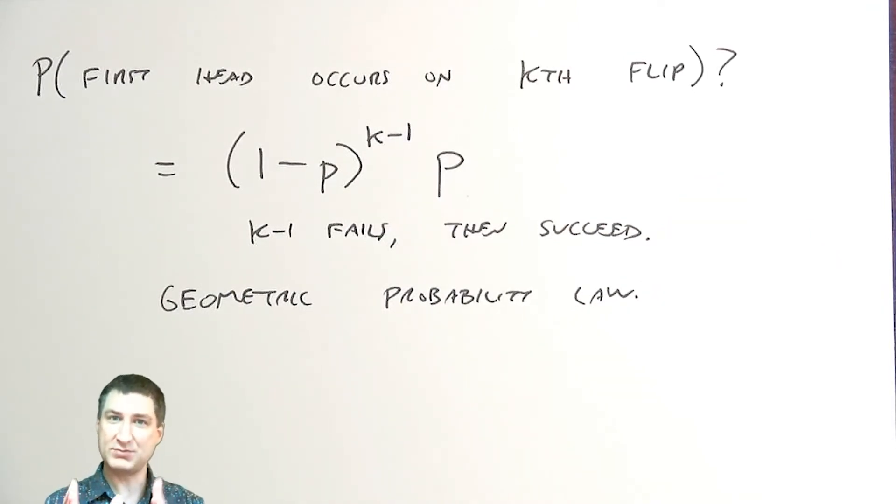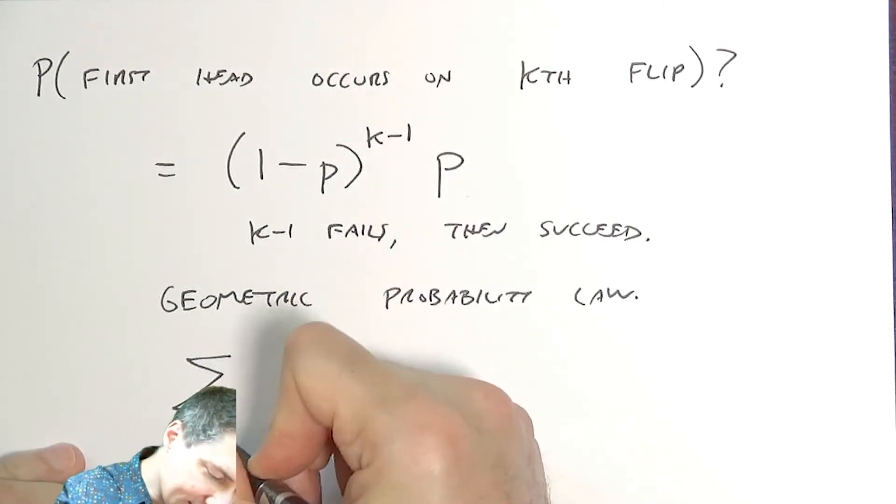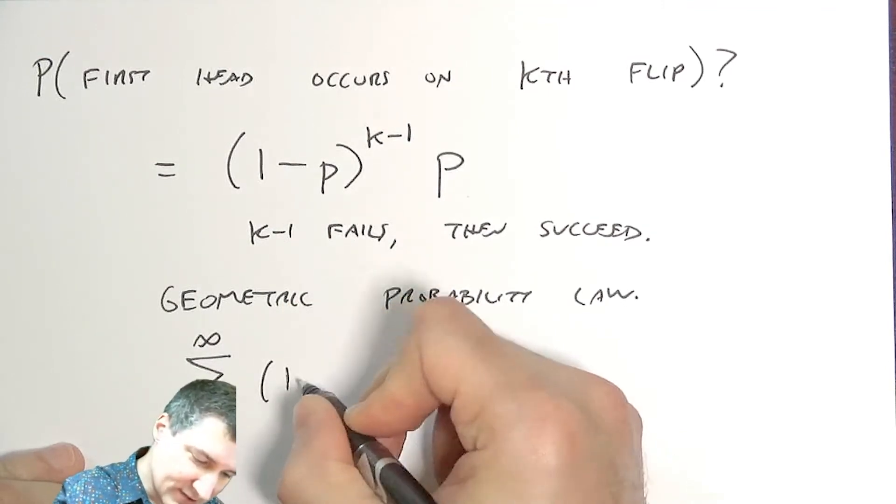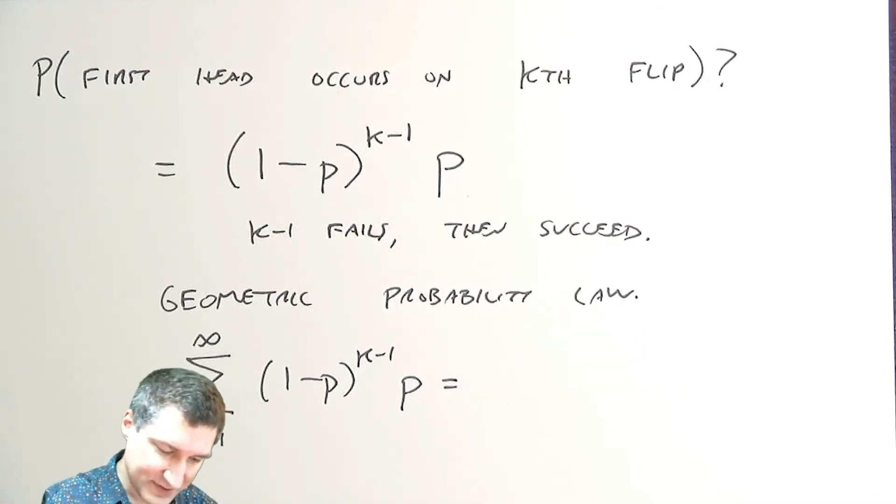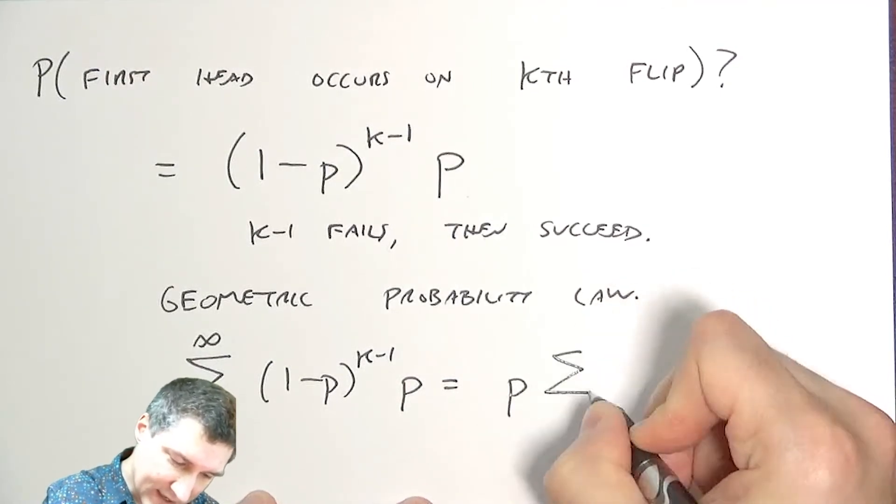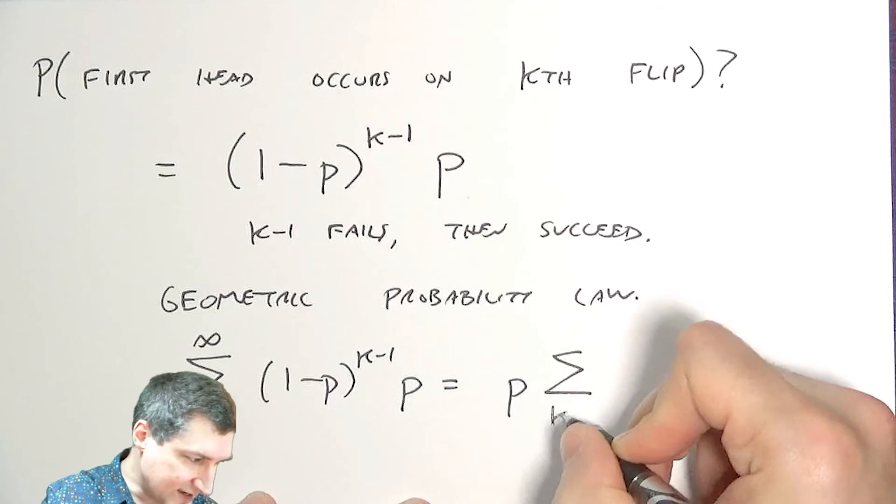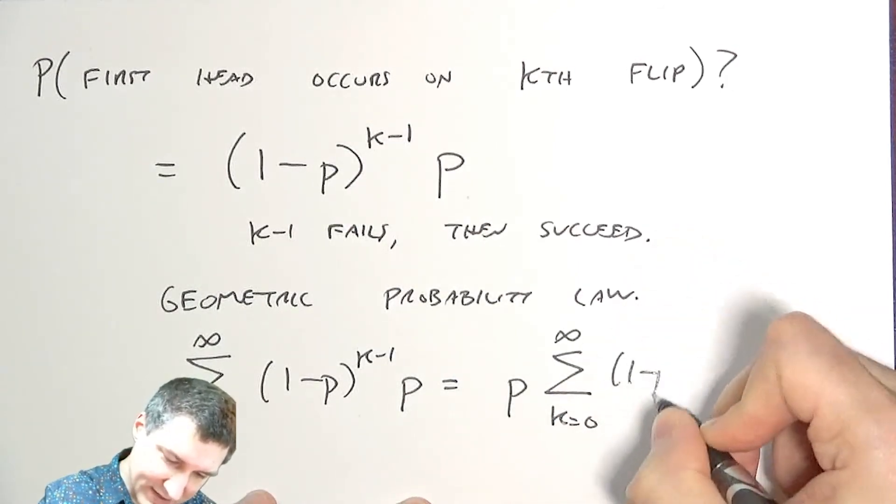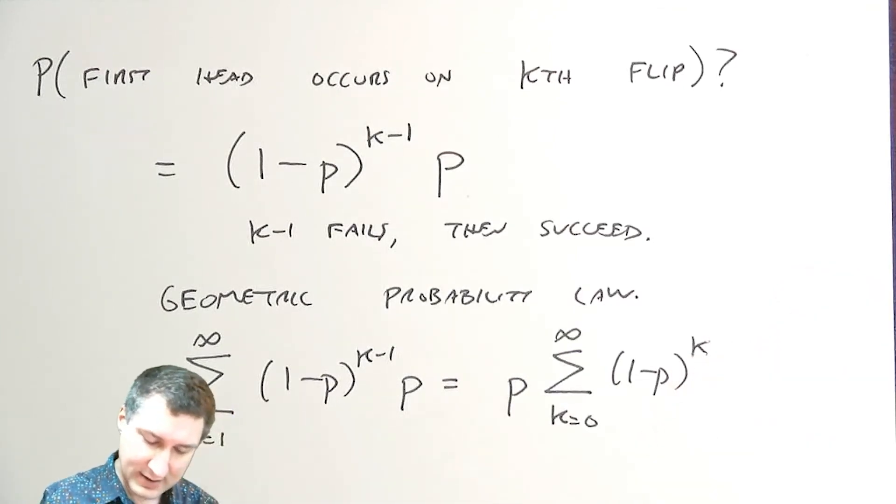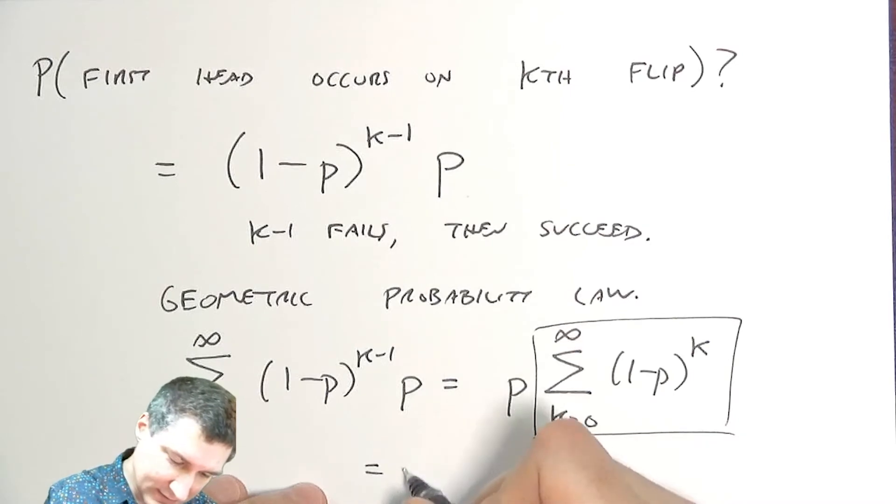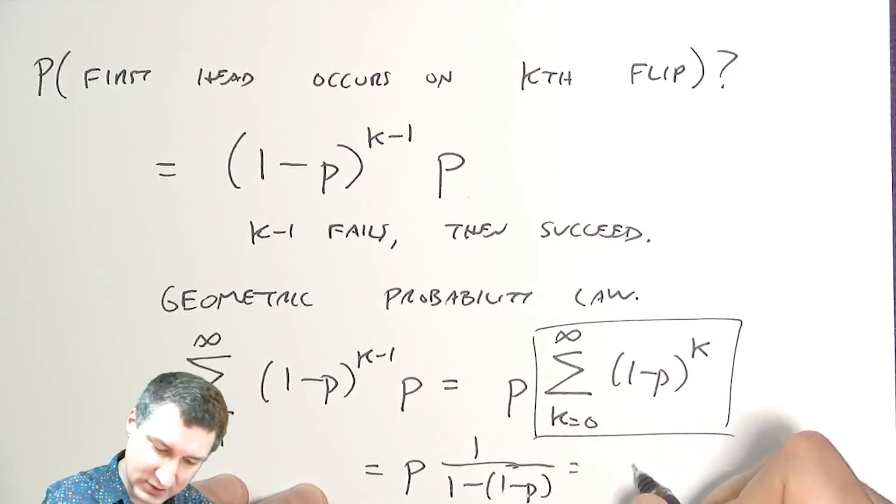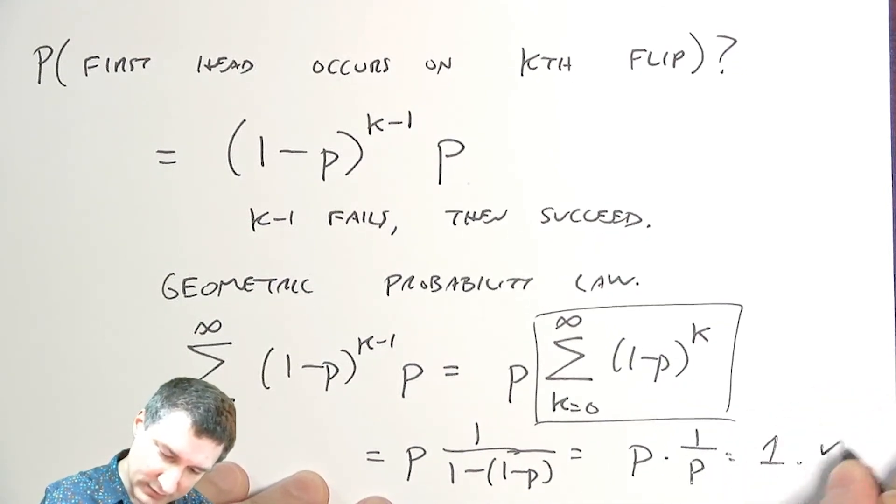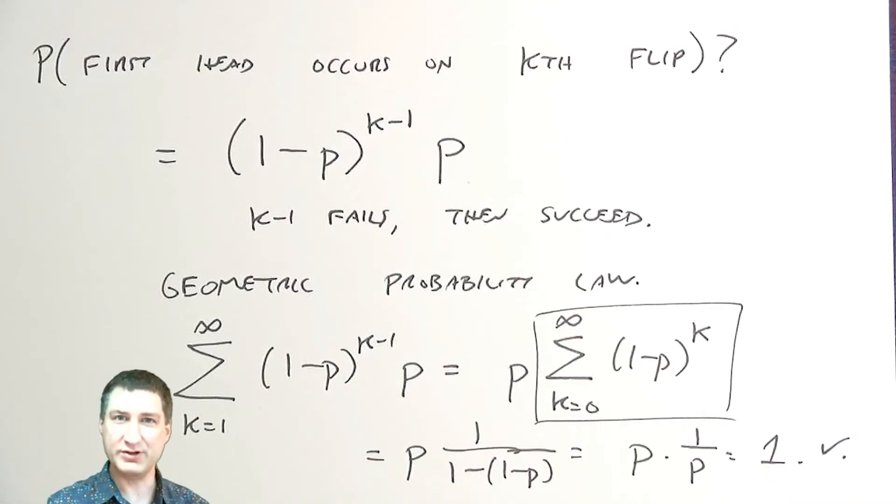I've assigned a probability to each of the possible k's. Just to be sure, I should really check that if I add up all these probabilities, I should get one. I'm going to take the p out and renumber this k to go from zero to infinity, and I have one minus p to the k. This sum is our old friend, and we know the answer is one over one minus whatever this thing I'm multiplying by is, which is just p times one over p, which is one. So I confirmed that yes, all these probabilities add up to one as they should.